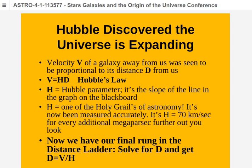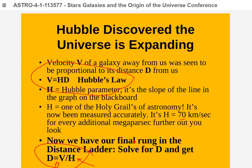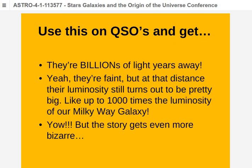The distance ladder is now complete: we have a new way to measure galaxy distances — solve V = Hd for d. Measure the velocity easily by taking a spectrum and measuring the Doppler shift, and we know H now, even though it took a long time to establish. Hubble originally thought H was about 500; it's actually about 70. Apply this to quasars and their distances come out to billions of light years — not hundreds of light years like stars in our galaxy.